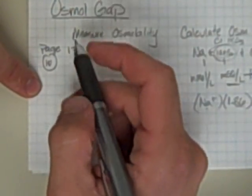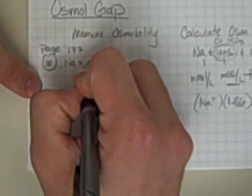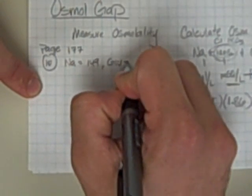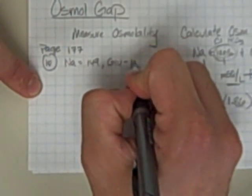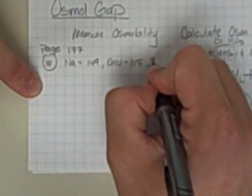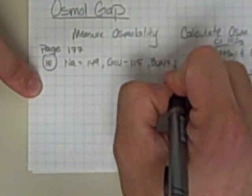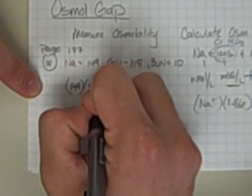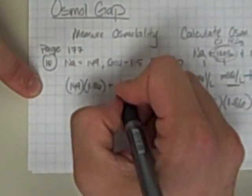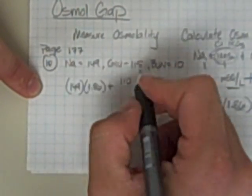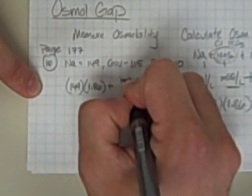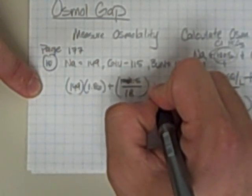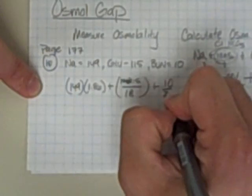So it says, find the calculated osmolality given a sodium value of 149, a glucose value of 115, and a BUN of 10. And so I do my sodium times 1.86 plus my glucose, which is 115, over 18, and don't forget your parentheses here, plus 10 over 2.8.